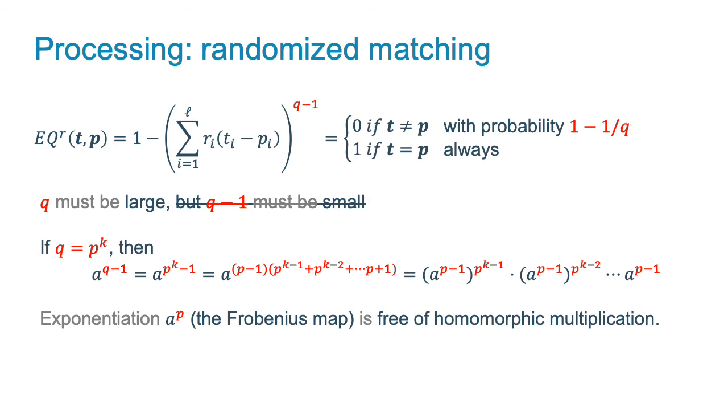However, for a large q being a prime power, we can use the following trick. We can rewrite the exponentiation as follows and use the fact that raising to the pth power doesn't require homomorphic multiplication. It means that we need multiplications to compute a to the p-1 and k-1 multiplications to combine all the powers of this element to powers of p. As a result, the multiplicative depth of the exponentiation and thus of the randomized matching is relatively low and equals to the logarithm of p-1 plus the logarithm of k, which doesn't depend on the pattern length.